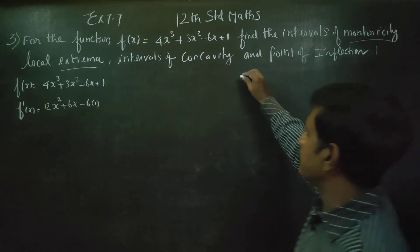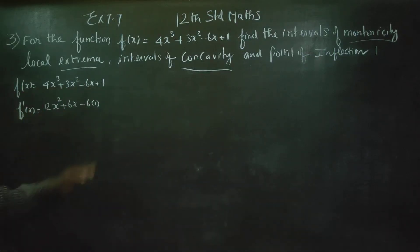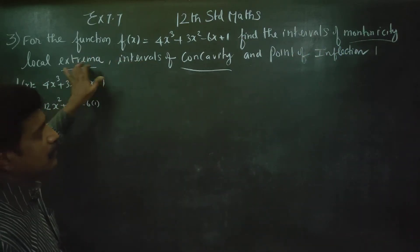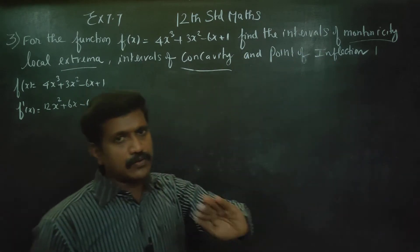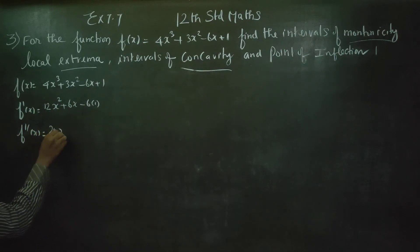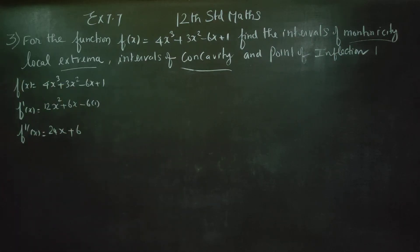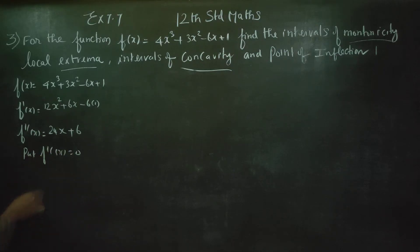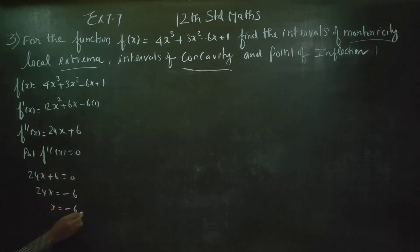Now we enter the second part: intervals of concavity. For concavity, we need the second derivative. f''(x) = 24x + 6. Setting f''(x) = 0: 24x = -6, so x = -1/4. This gives two intervals: (-∞, -1/4) and (-1/4, ∞).